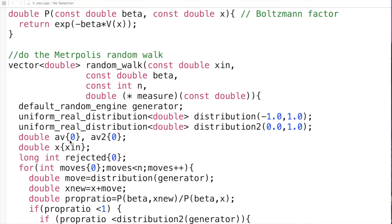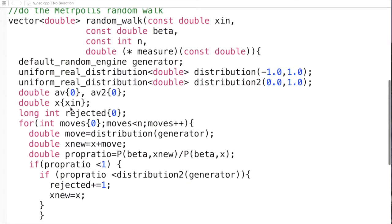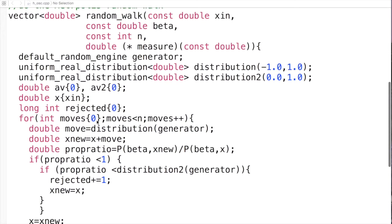We take a variable that will calculate the average of our measurements and the average squared of our measurements. We start x to be x in and we also count how many variables we've rejected. Then we make essentially n moves and trial moves to see whether it works.